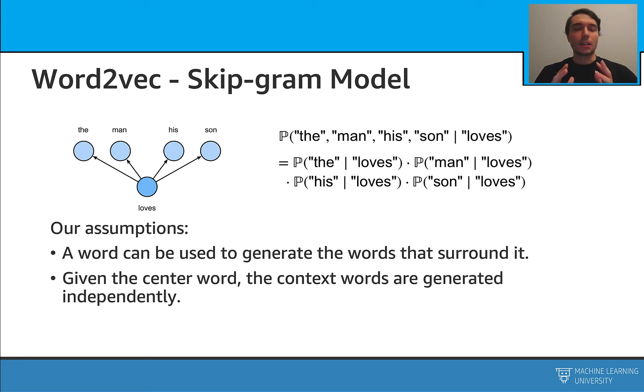Let's start with the skip gram model. The skip gram model assumes that we can create some surrounding words using a center word. With this assumption, as this is a probabilistic model, we will try to write down some probabilities and also try to calculate them. For example, for the sentence, the man loves his son, we will try to calculate this probability that for a given center word loves, what is the probability that we will see these context words, the man, his son?